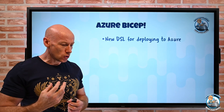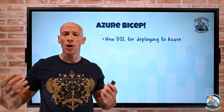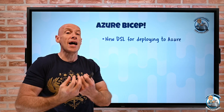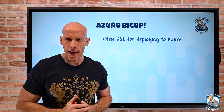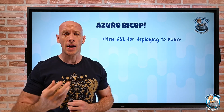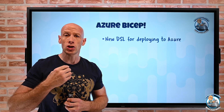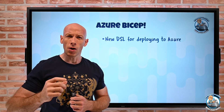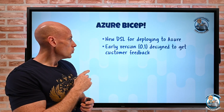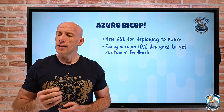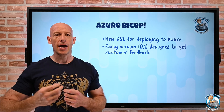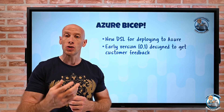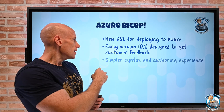Azure Bicep — what is this? It's a new DSL for deployments. It's not a general purpose language; it's specific just to Azure. When thinking about provisioning resources in Azure, we prefer declarative approaches — things like Azure JSON ARM templates or Terraform for third-party solutions. The challenge with ARM templates is they were very verbose and not nice to author. Bicep is a very early version, point one, out there to get feedback about this new declarative way to provision resources.